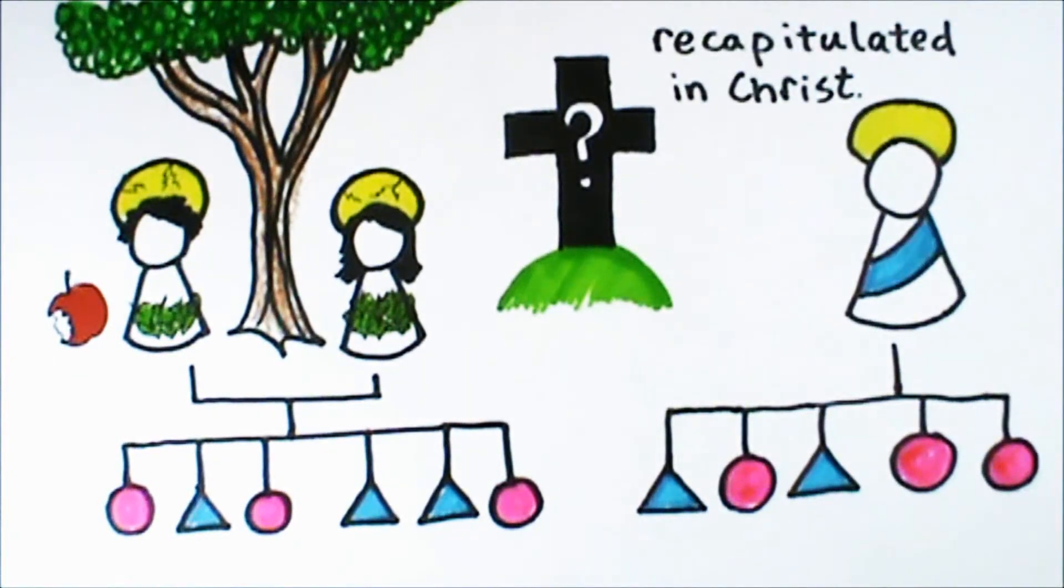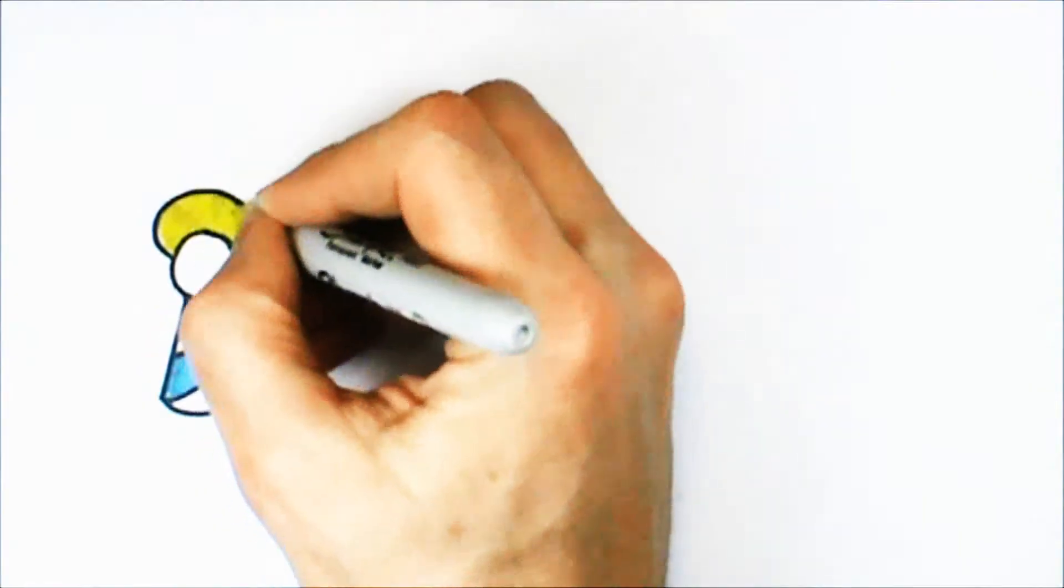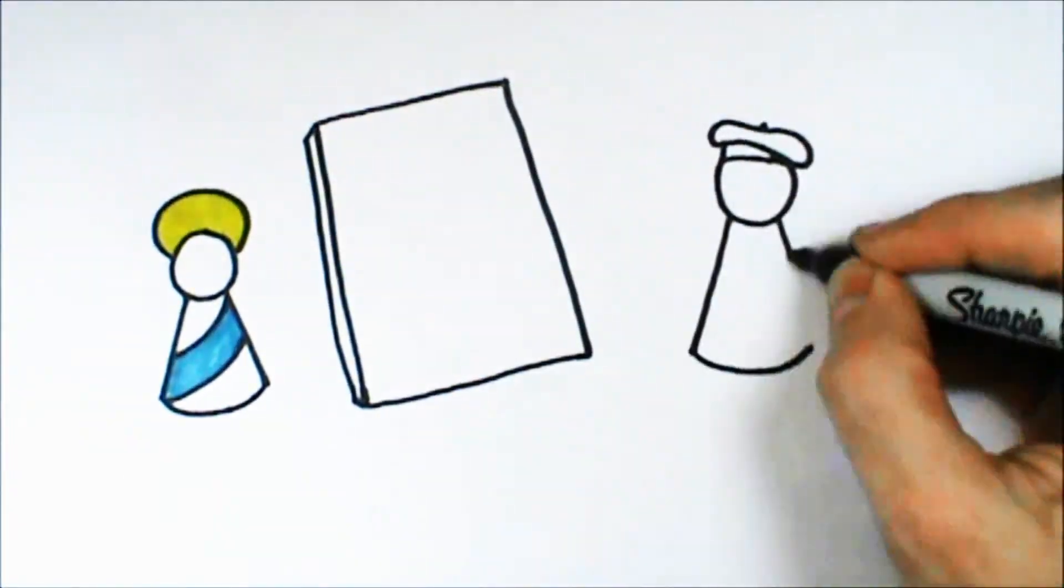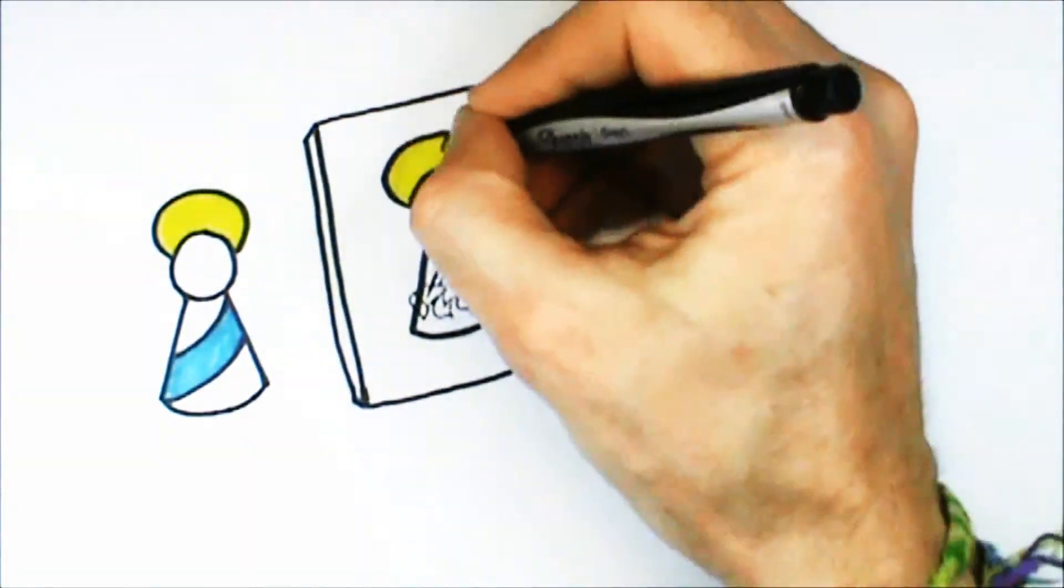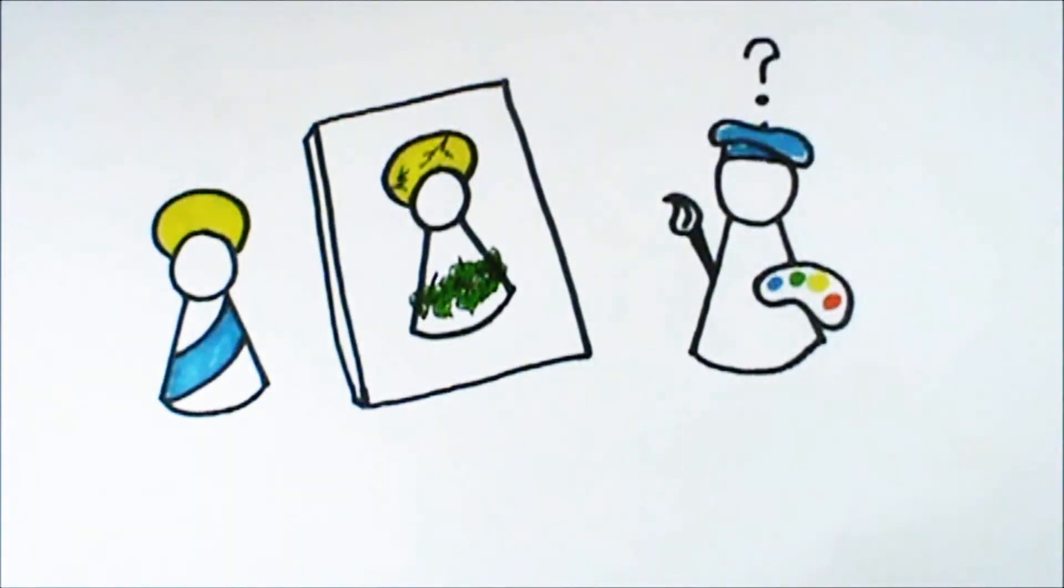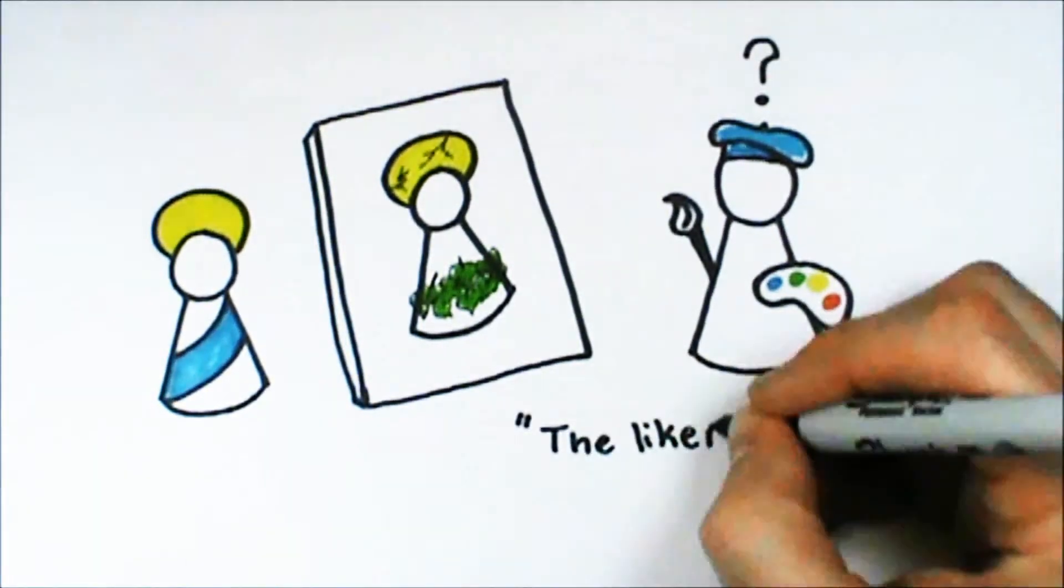The ancient theologians felt that this was one of the most crucial things that happened on the cross. One compared it to a painted portrait. If a portrait becomes distorted and stained, he said, the artist doesn't throw the canvas away, but the subject of the portrait has to sit for it again, and then the likeness is redrawn on the same material.